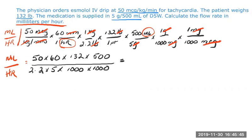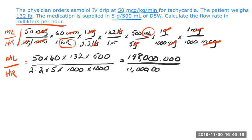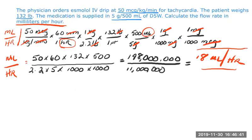We're going to have a numerator of 198 million — we get to working with some big numbers here, we just need to keep track of them — over 11 million. When we divide that out, that gives us 18 milliliters per hour. So the answer to our question is we're going to administer this medication at the rate of 18 milliliters per hour.